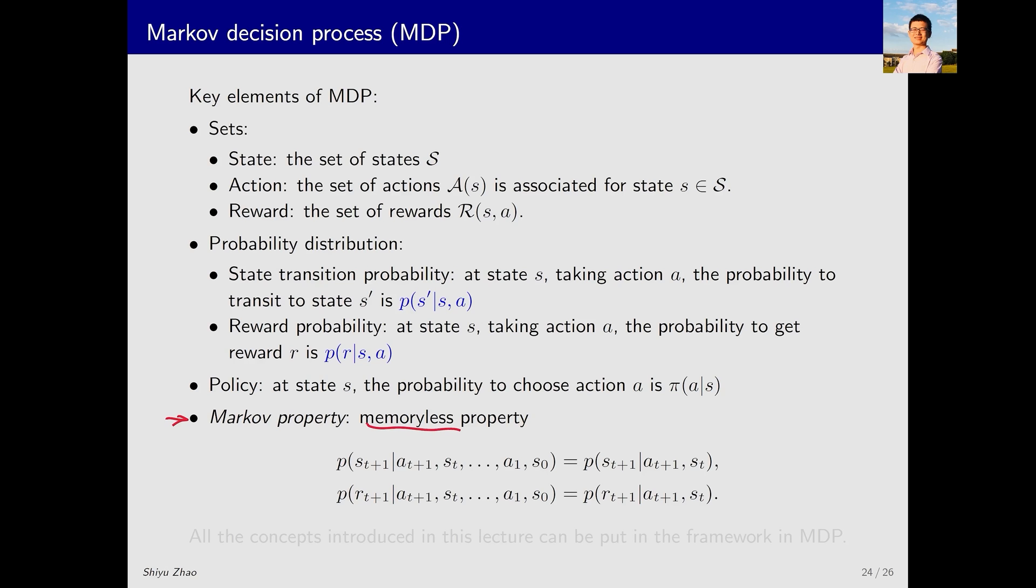The final key element of MDP is the Markov property, or called the memoryless property. What does it mean? It is clearly demonstrated by the equation. For example, if my initial state is S0 and I take an action, gradually moving to state S and then taking another action A. What is the probability of moving to the next state S'? It is the same regardless of the history and no matter where I was before. I am currently in state S, take action A, and then move to state S'. The probability is identical, indicating that previous history is irrelevant. Similarly, the reward received for taking action in state S is also independent of prior history. This is the Markov property.